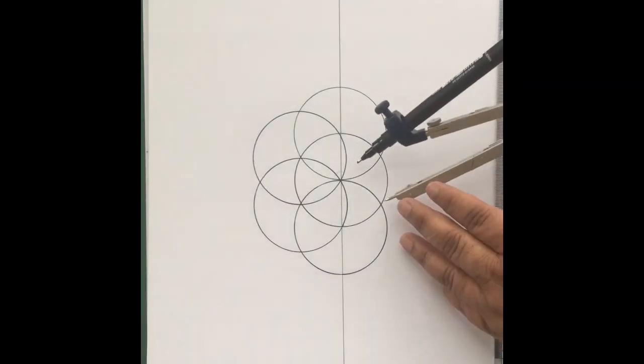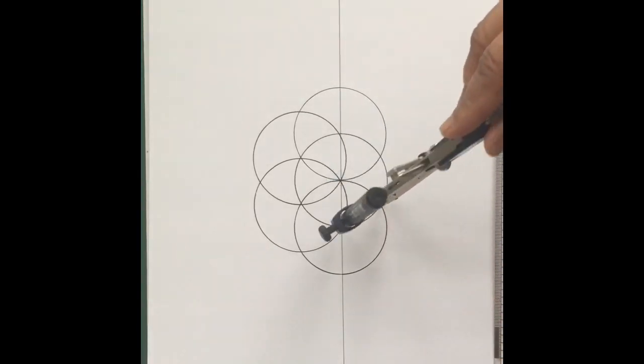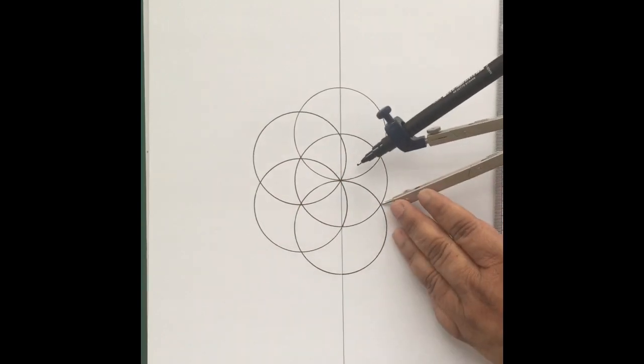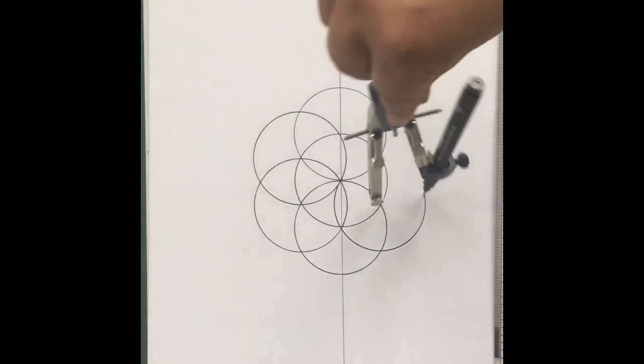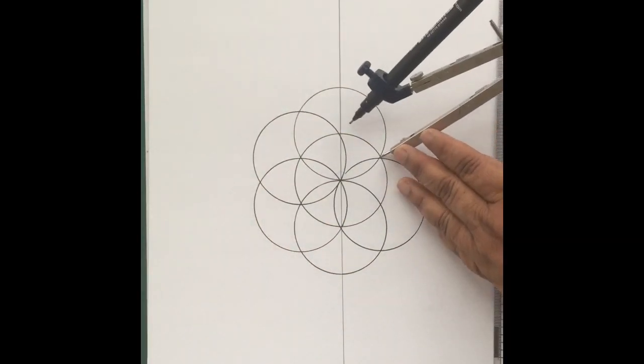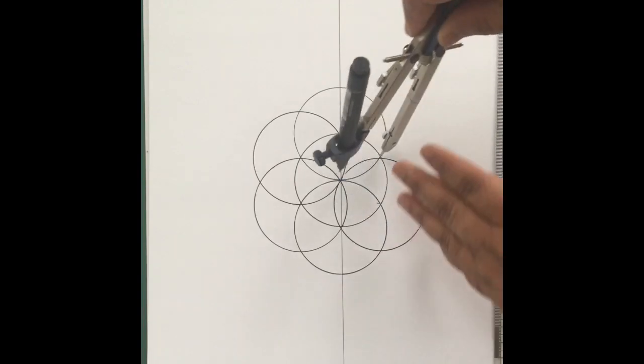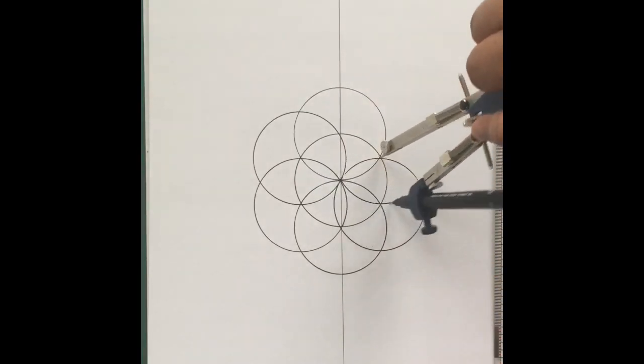As you draw each new circle, a fresh intersection appears which will lead you to do further circles until you complete a set of six circles around your central circle. That reveals a beautiful six petal flower in the middle.